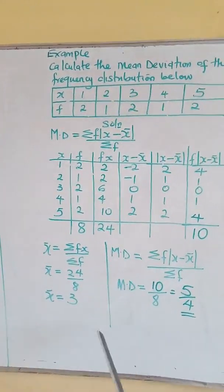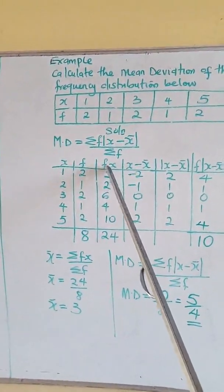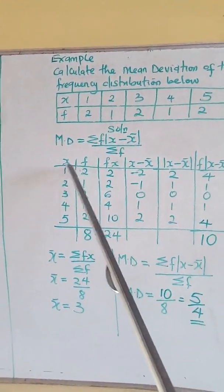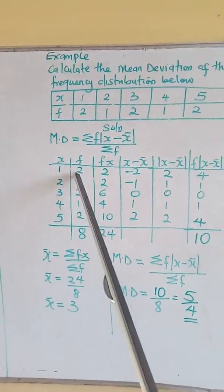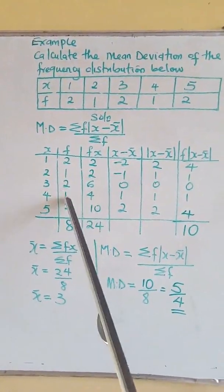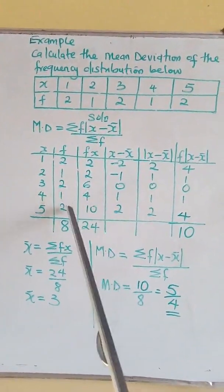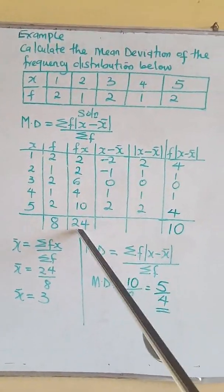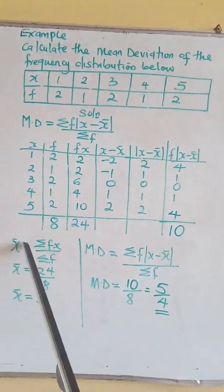The next thing you find is fx. What do you know of fx? f multiplied by x on the individual value in the column: 2 times 1 is 2, 1 times 2 is 2, 2 times 3 is 6, 1 times 4 is 4, 2 times 5 is 10. Find the summation of it to give you 24.